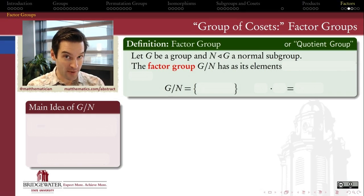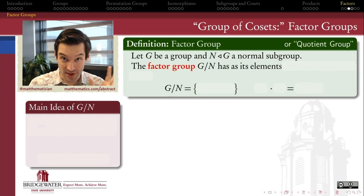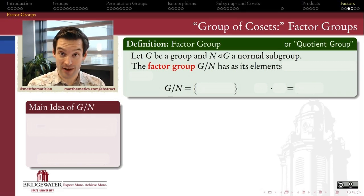So when we think about modular arithmetic, like the arithmetic that happens inside of Z mod 5, it turns out we can realize that arithmetic as a special case of forming a factor group. So that's why we'll read this notation, G mod N.